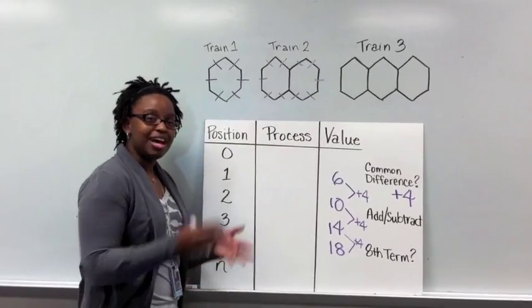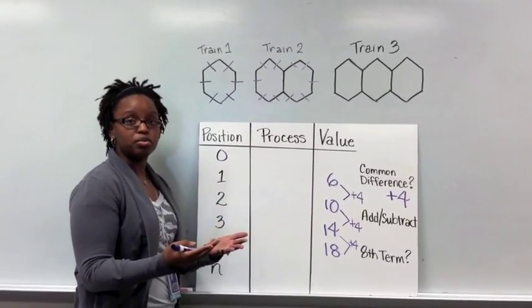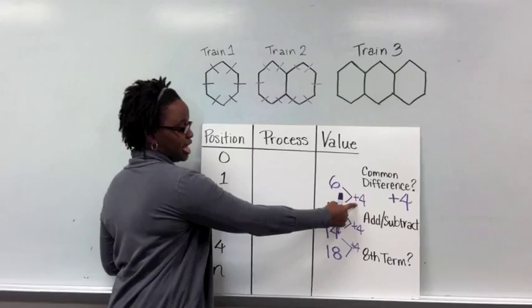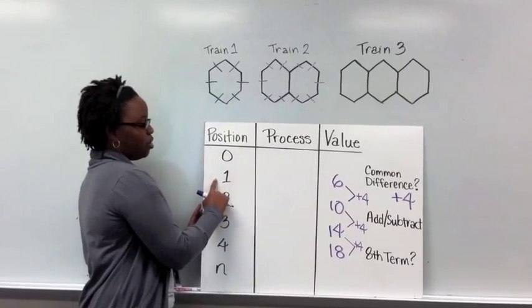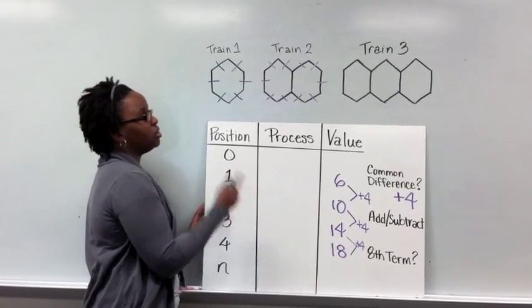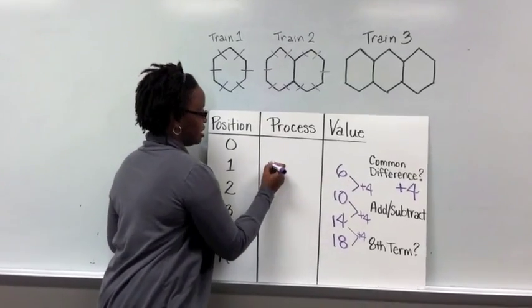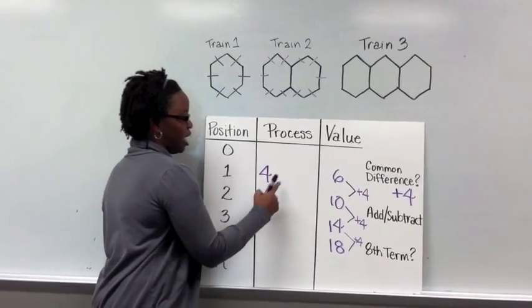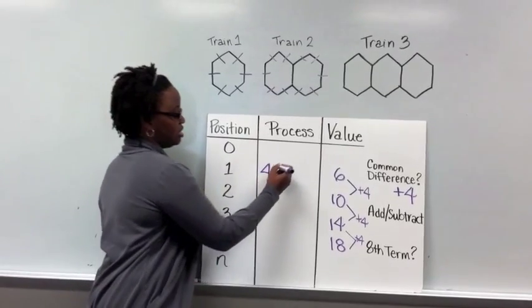We know that repeated addition is just a multiplication problem. So we can take that common difference of 4 and multiply it by the position or whichever train that we were on. So here, because I've got a common difference of 4, I'm going to multiply that 4 by the position, meaning the first train.